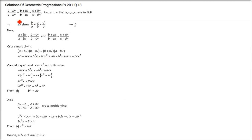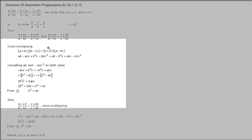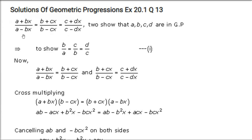Next NCERT problem: if (A+B)x/(A−B)x = (B+C)x/(B−C)x = (C+D)x/(C−D)x and x ≠ 0, show that A, B, C, D are in GP. As seen before, this requires B/A = C/B = D/C.